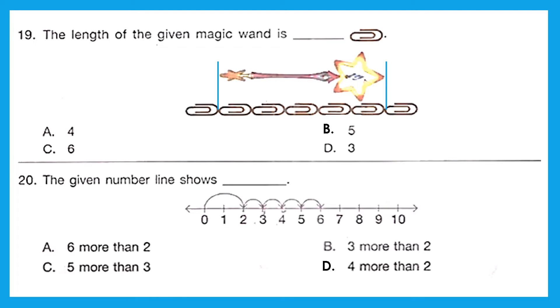Question 19: The length of the given magic band is how many clips? Okay, let's see. It is between this and this. How many clips are there? 1, 2, 3, 4, 5. So in total 5 clips. Option B, 5 is the right answer. Question 20: The given number line shows what? Okay, so the number line first it is going to 2, and from 2 there is a jump of 4 more. Okay, so it is showing 4 more than 2. Option D is the right answer.